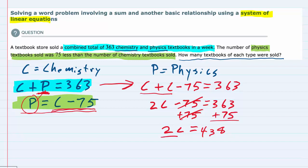And then lastly, divide both sides by 2 to get the C by itself. And we have C equals 219.